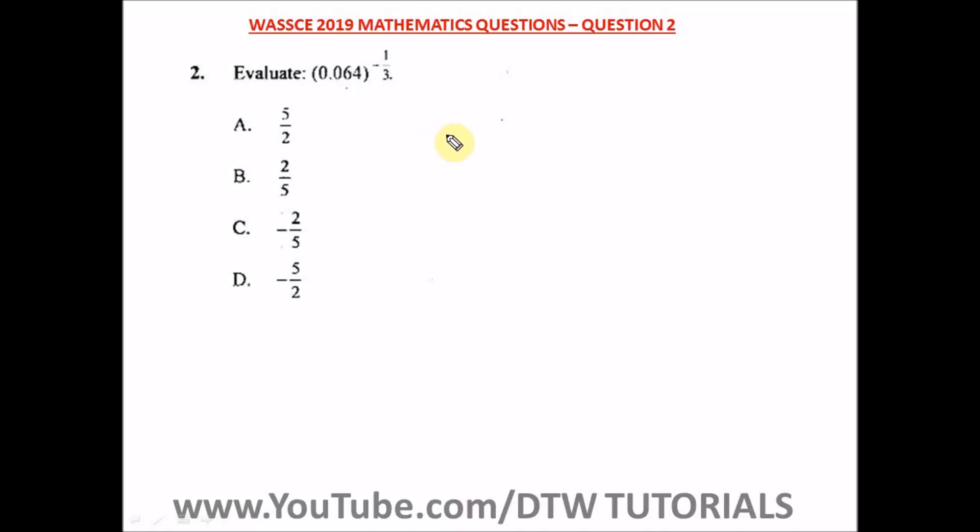Question 2 of the WASSCE 2019 mathematics past question. It says evaluate this. We have 0.0064 all into brackets raised to power minus 1 over 3.